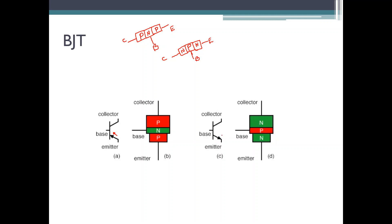This arrow mark itself is an indication of what type of transistor it is — whether it is an NPN transistor or a PNP transistor. Sandwiching one type of material between the other type will give rise to a transistor with three terminals. This is how you actually construct the transistor.